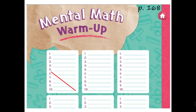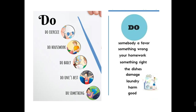We have finished with our mental math. Let's continue. Here I put some actions that you do — "do" as a verb, not as an auxiliary. That is something important that you need to understand. When we use the verb "do" as a verb, we use it with these examples: I do exercise, I do housework — for example, I help my mother to sweep. You do badly when you have a bad grade in school or when you do something that was not correct.